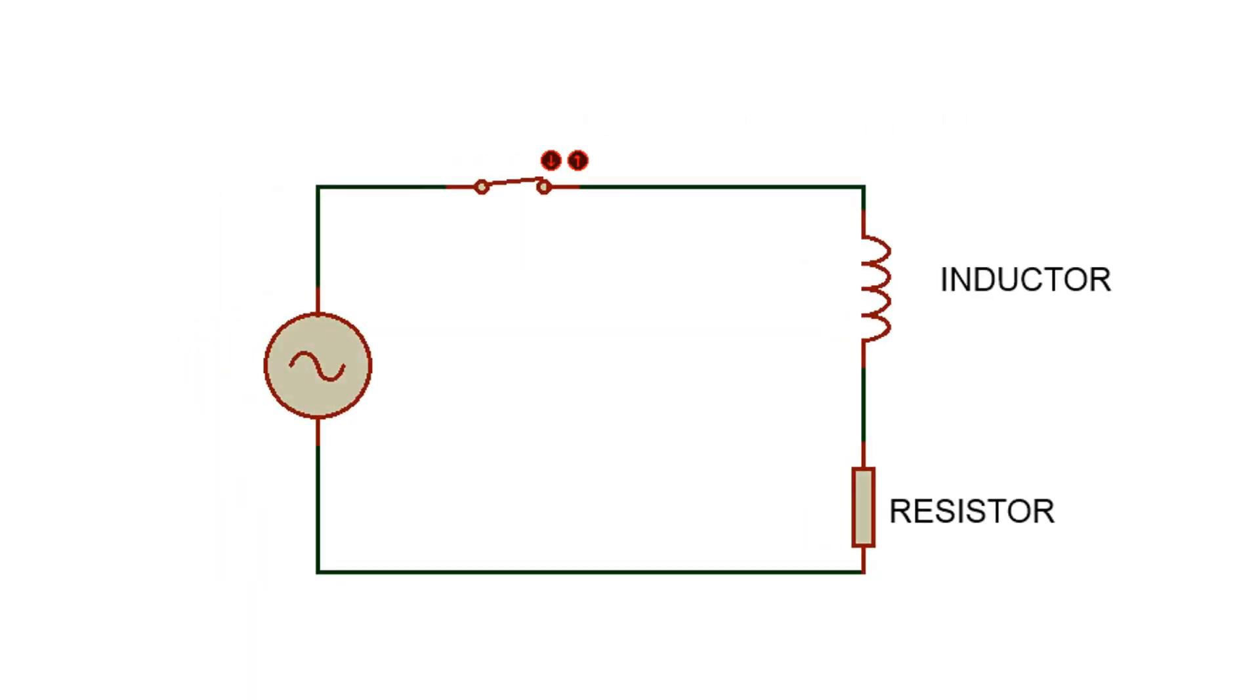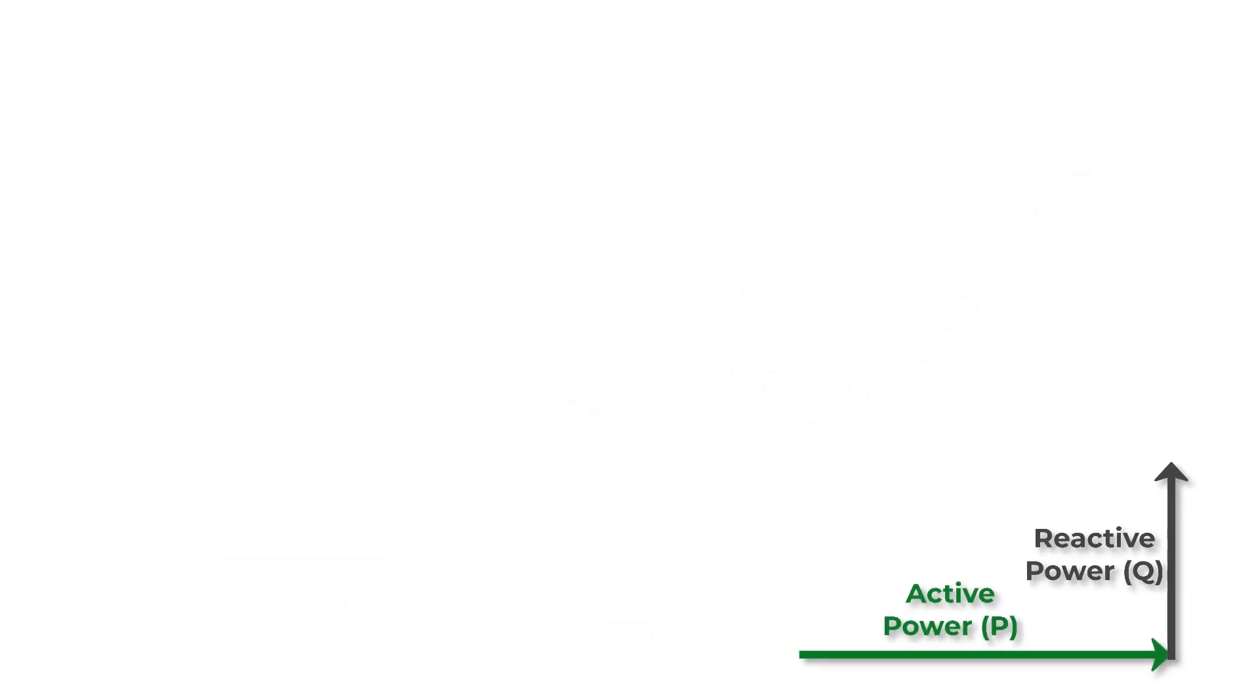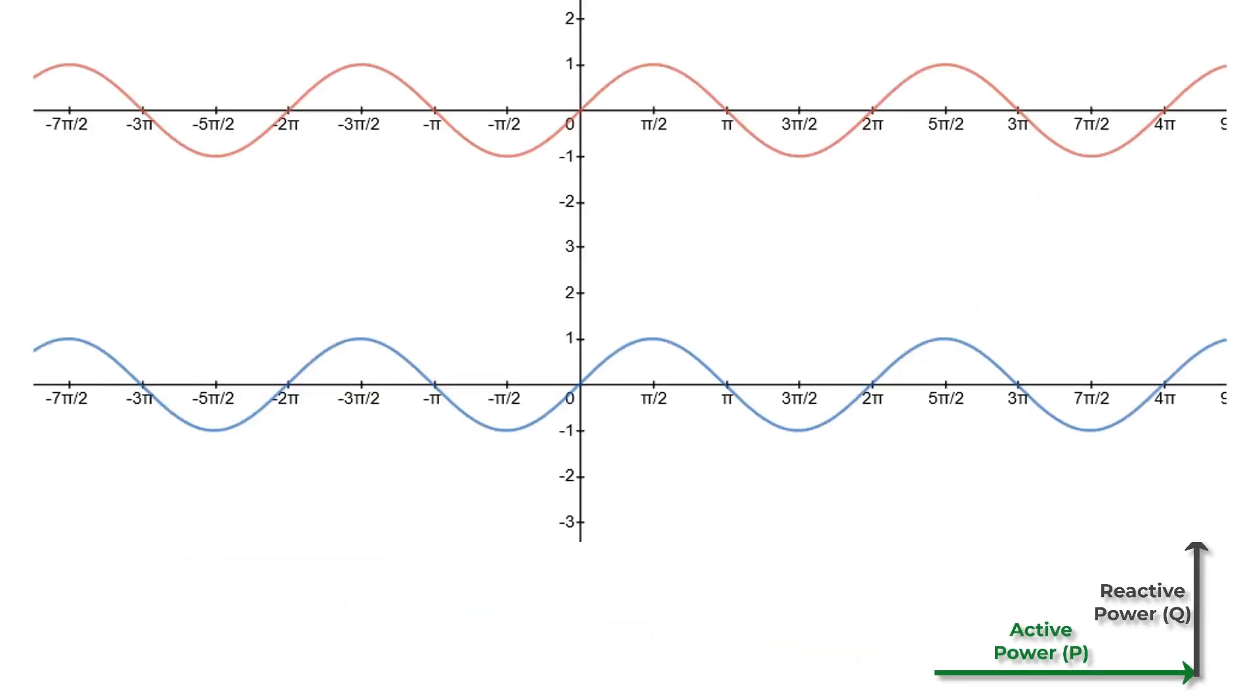What if our load is a mixture between resistive and inductive load? Now we will have an active power and reactive power at the same time, and the current will be shifted by an angle between zero degrees and 90 degrees depending on the load.